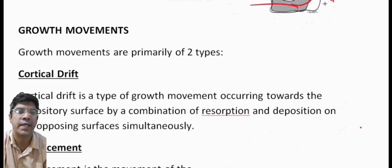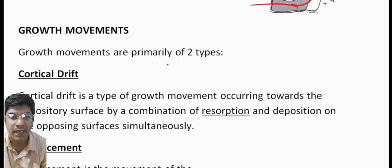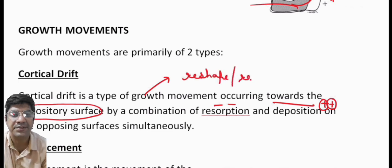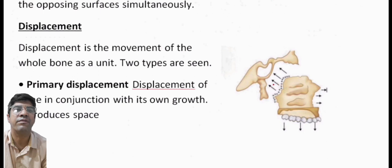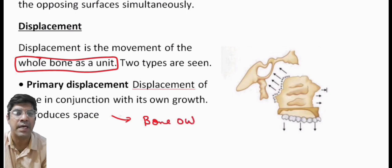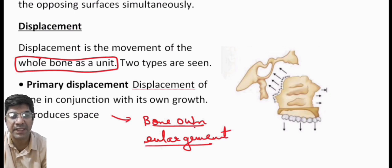Growth movements can occur in several ways. Cortical drift is a type of growth movement that involves the shifting of bone tissue toward the depository surface. This movement occurs due to a combination of resorption on one surface and deposition on the opposing surface, helping to reshape and reposition the bone. Displacement means the movement of the whole bone as a unit. Primary displacement is the displacement related to the bone's own enlargement or growth.